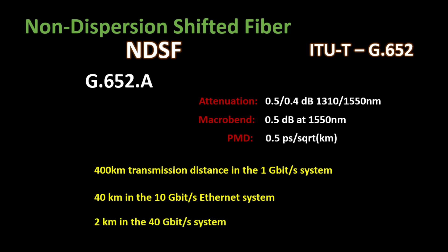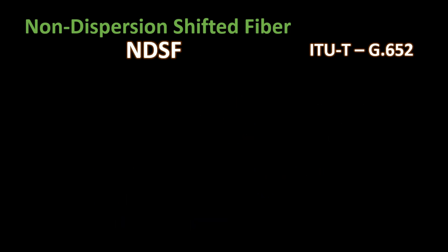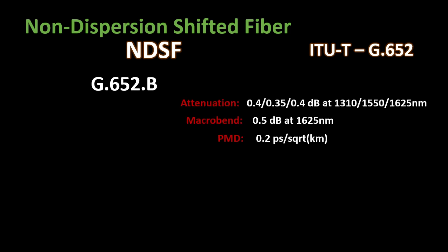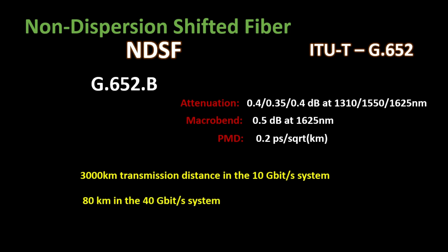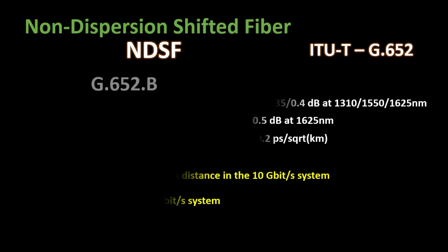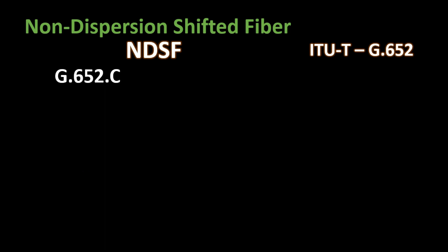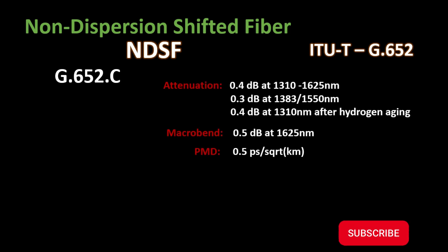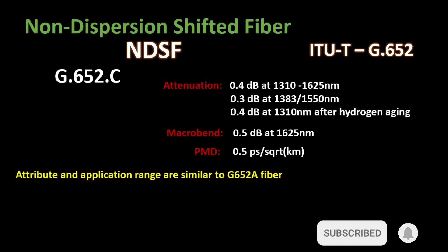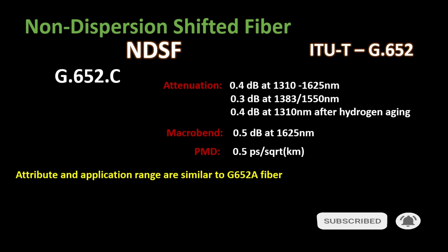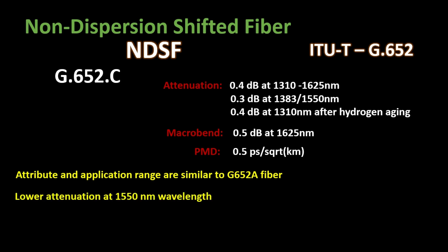G.652C fiber has improvements in water peak elimination. It has improved attenuation of 0.4 dB at 1310 nanometers, and PMD improved to 0.2 picoseconds. With that, a 10 Gbps signal can travel 3000 km, and a 40 Gbps signal can travel 80 km. G.652C has lower attenuation at 1550 nanometers and is used for the extended and short band in the range of 1360 to 1530 nanometers.